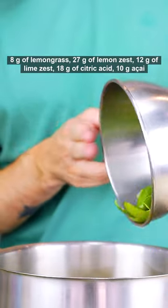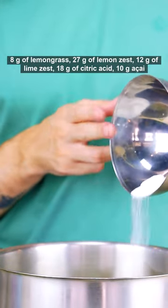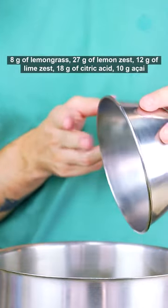Add 8 g of lemongrass, 27 g of lemon zest, 12 g of lime zest, 18 g of citric acid, 10 g of acai.